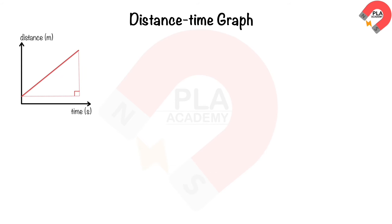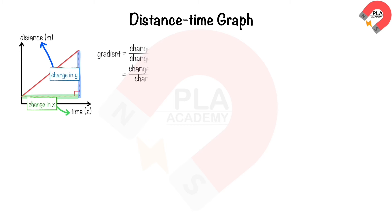Distance-time graph: on a graph of distance against time, we draw a right triangle where the change in x represents time and the change in y represents distance. The gradient of the graph is the ratio of the change in the y-axis to the change in the x-axis — that is, the ratio of change in distance to change in time. The gradient of the distance-time graph is the speed of the object.